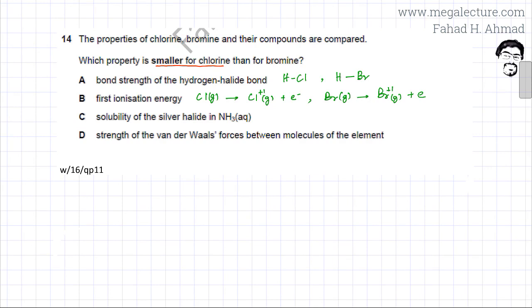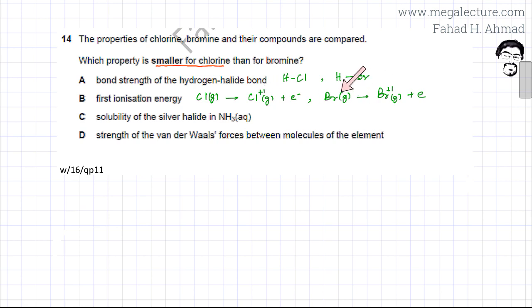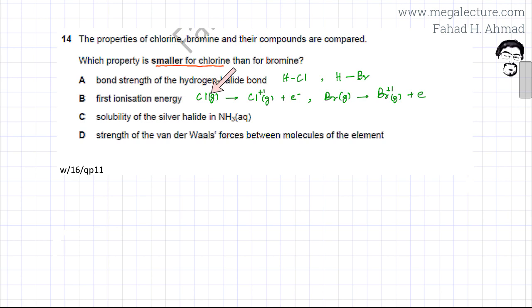The second property is first ionization energy — removing one electron from a gaseous chlorine atom to form a +1 ion. The same applies to bromine forming a +1 ion. The first ionization energy is going to be greater for chlorine because it is a smaller atom, making it more difficult to remove electrons. The electron is closer to the nucleus, so the attraction is stronger.